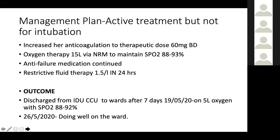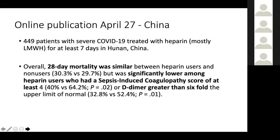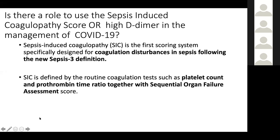Her outcome: she was discharged from CCU to the wards after seven days on 5L oxygen with SpO2 88 to 92%. As of Monday the 26th, she was doing well on the ward. Our oxygen demand came down purely on our anticoagulation. Based on a publication from China published online April 27th — a study of 449 COVID patients treated with heparin (LMWH) for 7 days — the overall mortality was similar, but there was significantly lower mortality in heparin users, especially if they had a sepsis-induced coagulopathy score of at least 4 or high D-dimers.